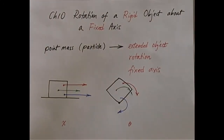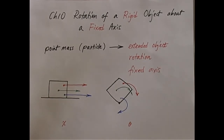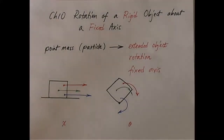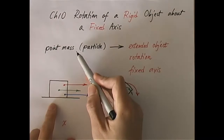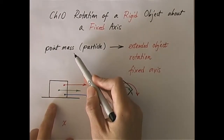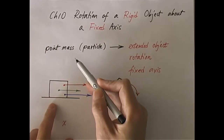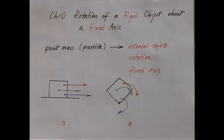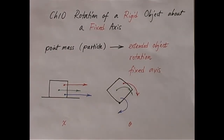Chapter 10: Rotation of a rigid object about a fixed axis. So far we spent a few chapters studying the kinematics and dynamics of a system which is basically a point mass. Of course, in real life we don't have point masses — every object has shape and size. Under certain circumstances, the shape and size are not very important because they do not affect the outcome significantly.